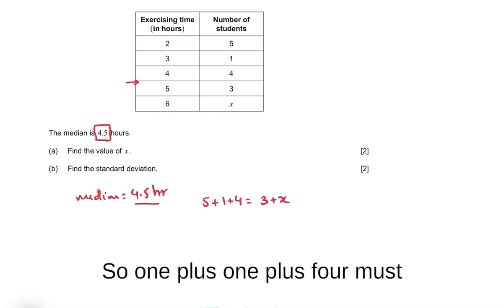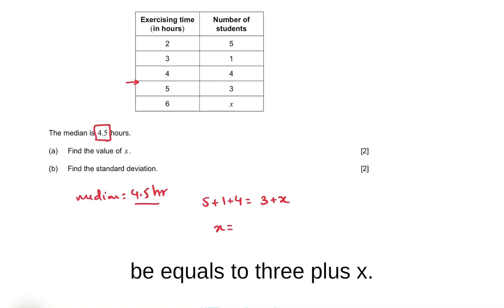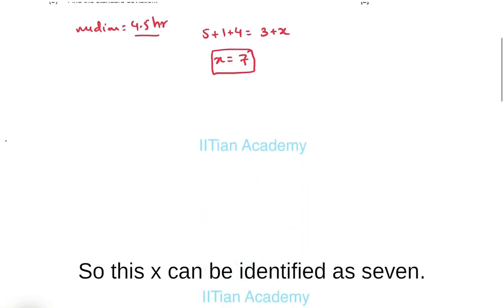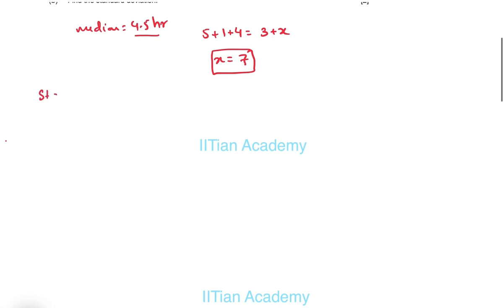So 1 plus 1 plus 4 must be equal to 3 plus x. So this x can be identified as 7.